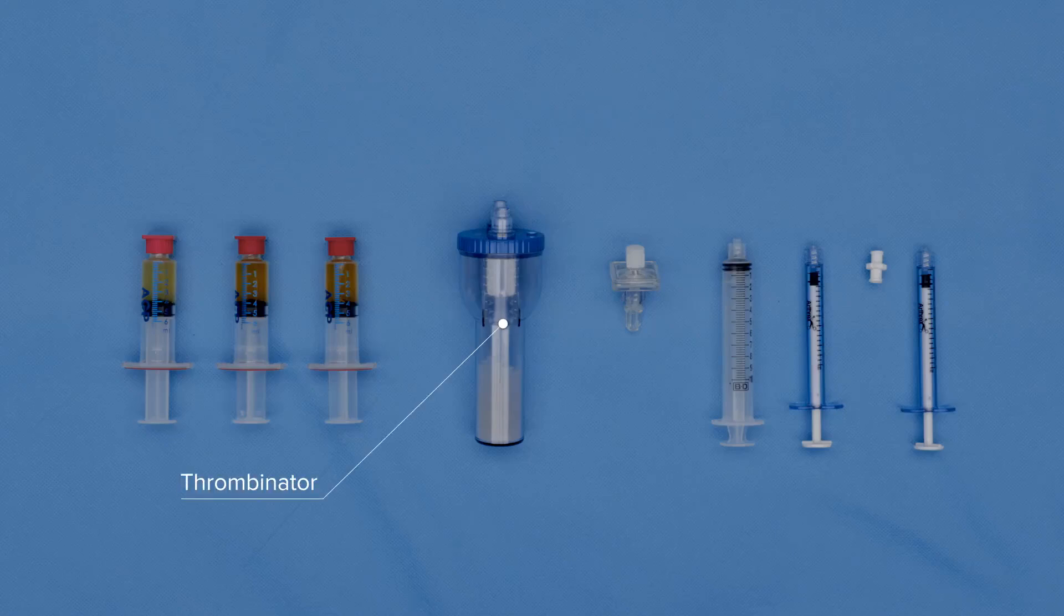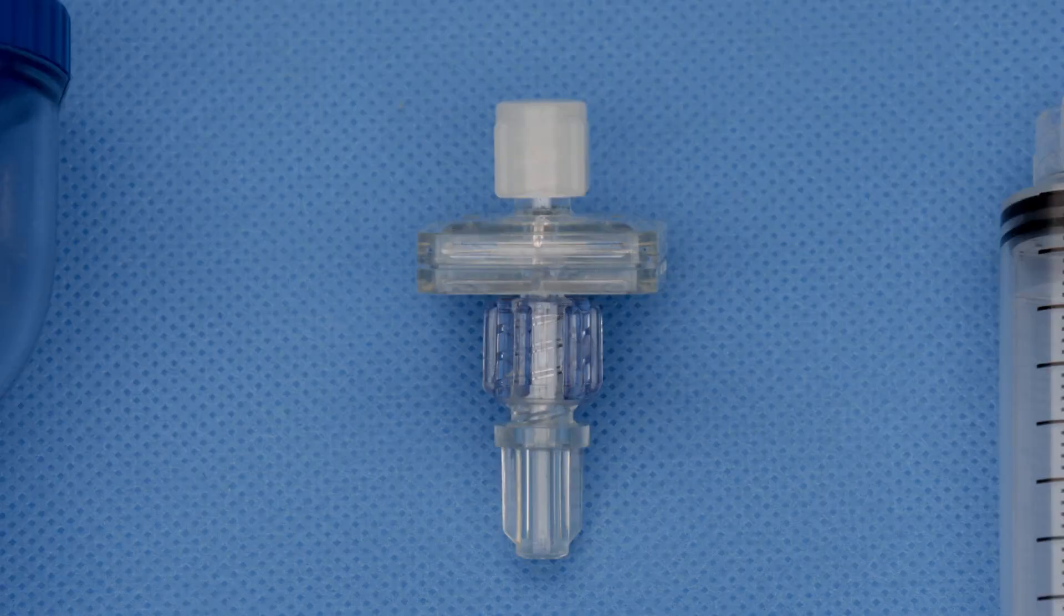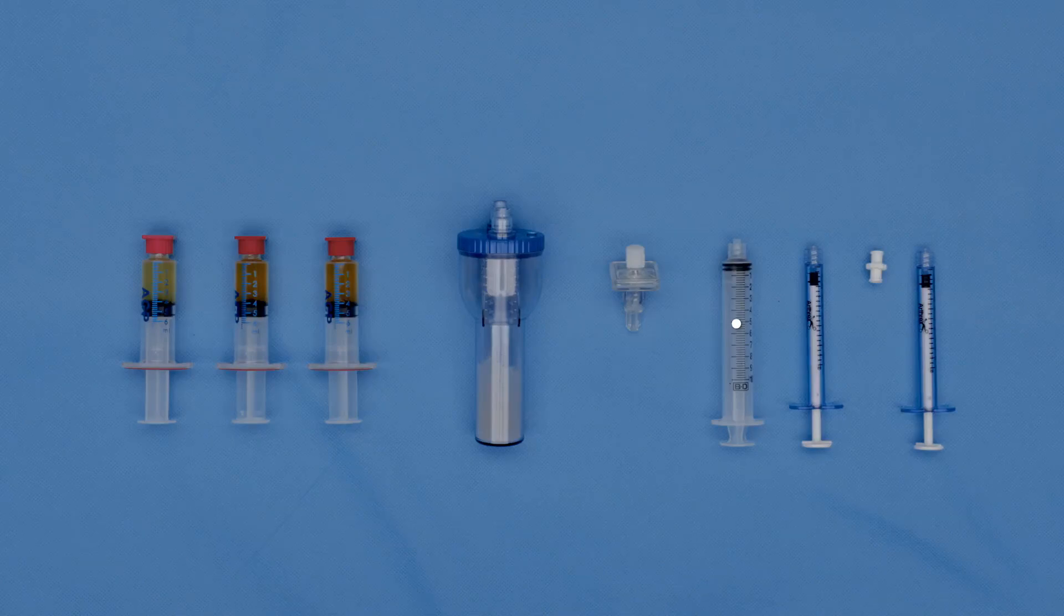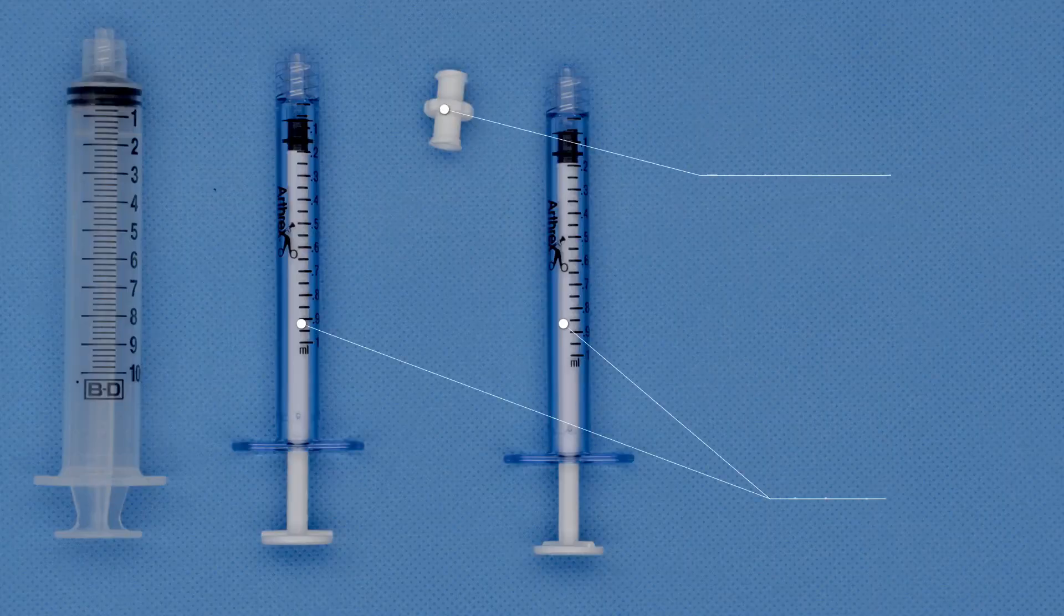Furthermore, you need the thrombinator device, you need a filter, you need a 10 ml syringe and you need 2 small syringes per syringe, 1 ml and 1 female to female adapter.